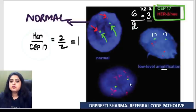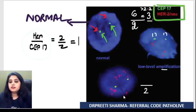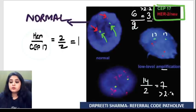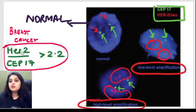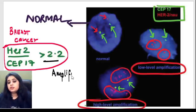In the high-level amplification: denominator is 2, and at least 12 to 14 red signals are there — the ratio becomes 7, much more than 2.2. So remember this formula: HER2/neu divided by CEP17. CEP17 is expected to be 2. It's the numerator you count. If the ratio is more than 2.2, label it HER2/neu amplified.